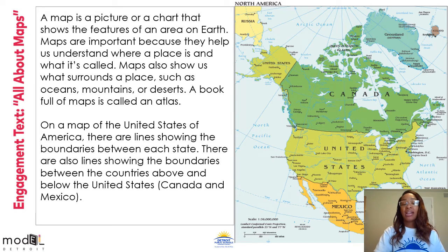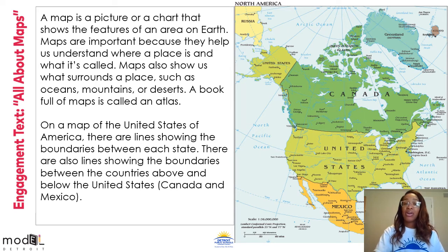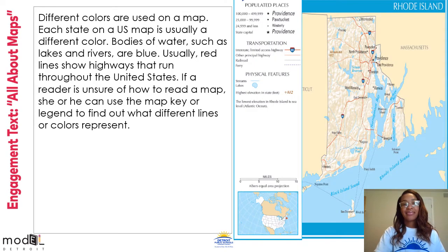On a map of the United States of America, there are lines showing the boundaries between each state. There are also lines showing the boundaries between the countries above and below the United States: Canada and Mexico. Different colors are used on a map. Each state on a U.S. map is usually a different color. Bodies of water, such as lakes and rivers, are blue.